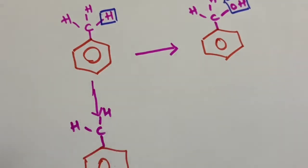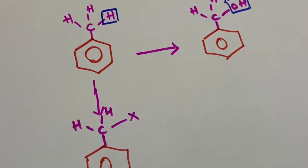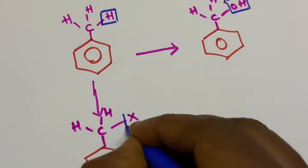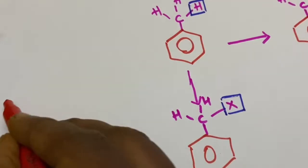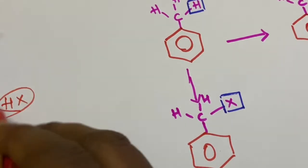Now the hydrogen has been replaced by halogen. Now think of the reagent. What reagent can you use for this reaction? So if you write HX then it is wrong. Then it is totally wrong.